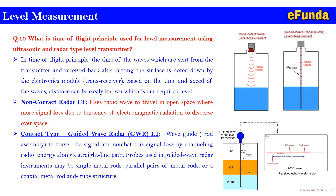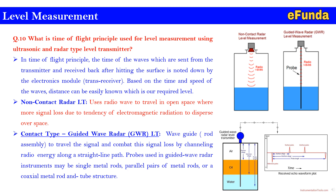The second type is contact type guided wave radar (GWR), which uses a rod assembly as a wave guide to channel radio energy along a straight line path, combating signal loss. GWR instruments may be a single metal rod, parallel pairs of metal rods, or a coaxial metal rod and tube structure.